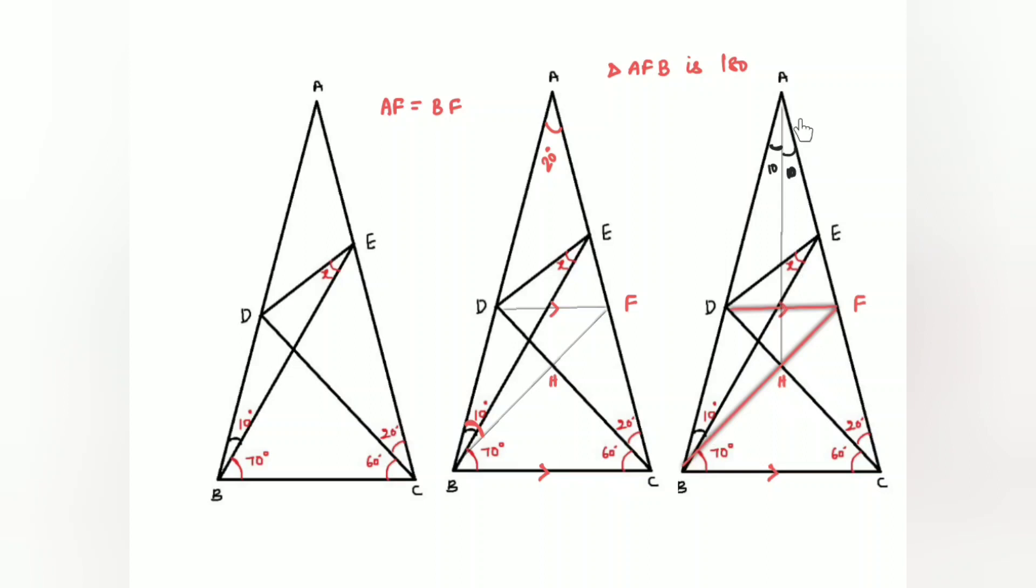Look at ABH and ABE. Those two, ABH is congruent to ABE. If you look at these two, ABH and ABE, these two triangles are congruent because in ABE also the angles are 20, 10, and this one is 150. And the common side is AB.